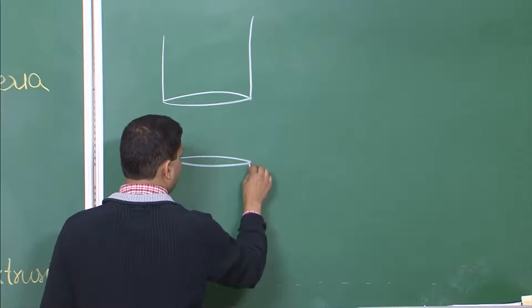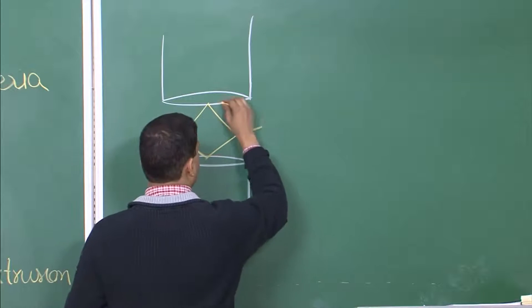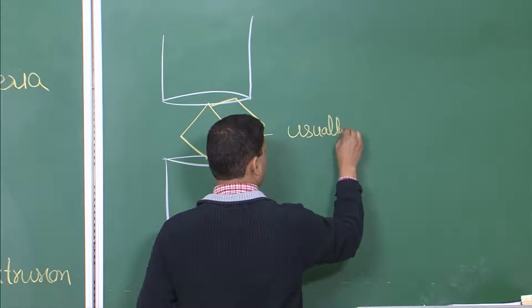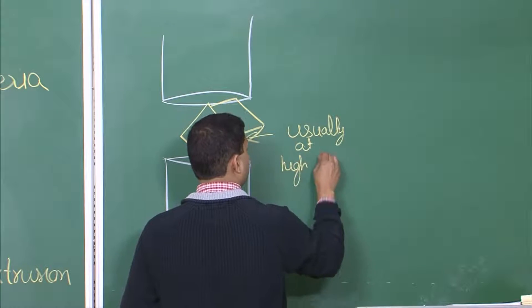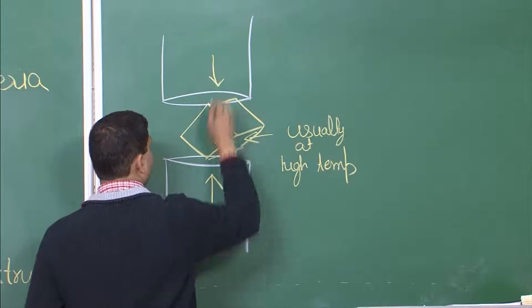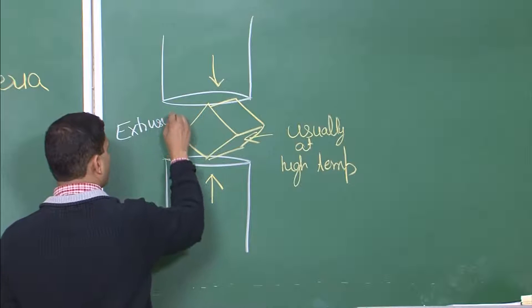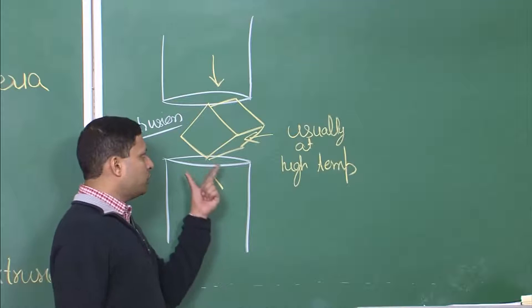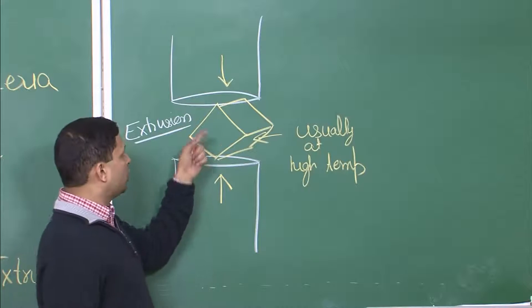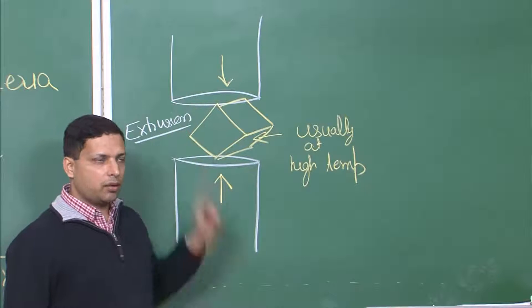Here you have two anvils which come together and you have a workpiece — let us say a rectangular block — in between them. This is usually at high temperature and these anvils are forced against each other. This process is forging. In forging, you would want to know what is the load at which this material will start to deform, and what force you will supply to these anvils.